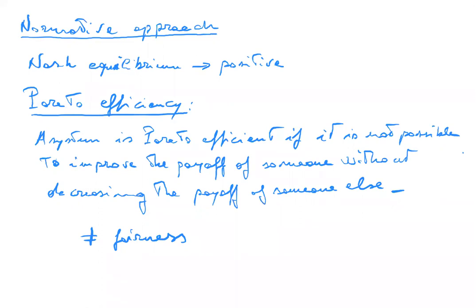Today I'm going to start moving from game theory to economics by describing a simple example that elucidates a number of concepts related to this normative approach. One is the issue of public goods and property rights.